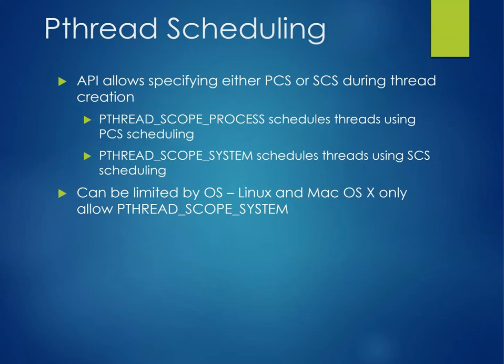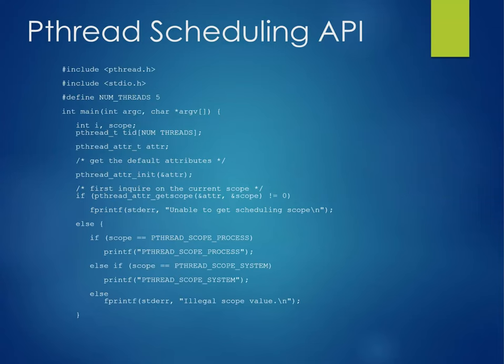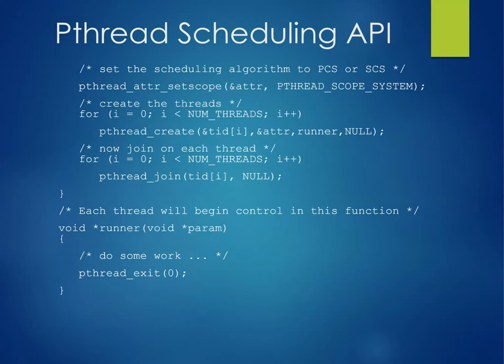Pthread scheduling allows specifying either PCS or SCS during thread creation. PTHREAD_SCOPE_PROCESS schedules threads using PCS scheduling, and PTHREAD_SCOPE_SYSTEM schedules threads using SCS scheduling — this can be limited by the OS. Linux and Mac only allow PTHREAD_SCOPE_SYSTEM. In the API example, we get the default attributes, acquire the current scope, set the scheduling algorithm appropriately, create our threads, join them, and each thread will run a control function and then exit.